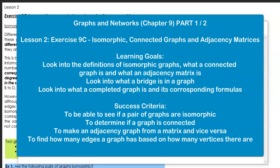This is lesson two from the graphs and network topic. In this lesson we'll be looking at isomorphic connected graphs and adjacency matrices. There's a lot to unpack on this one and I'm going to split it up into two parts. The learning goal for this video is to look into the definitions of isomorphic graphs, what a connected graph is and what an adjacency matrix is. We're going to look into what a bridge is in a graph and also look into what a completed graph is and its corresponding formulas. The success criteria is to be able to see if a pair of graphs are isomorphic, to determine if a graph is connected, to make an adjacency graph from a matrix and vice versa, and define how many edges a graph has based on how many vertices there are.